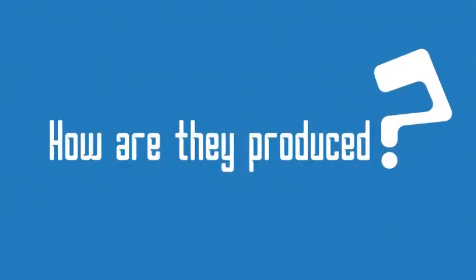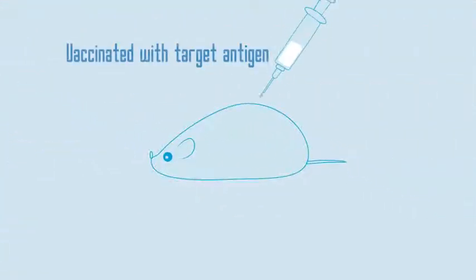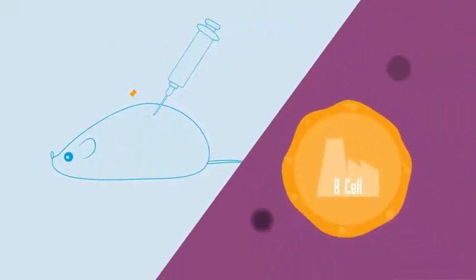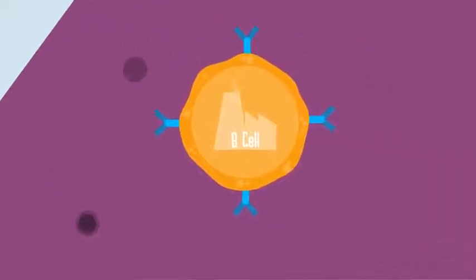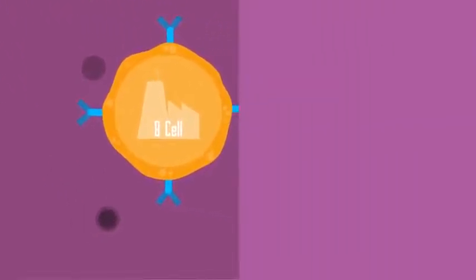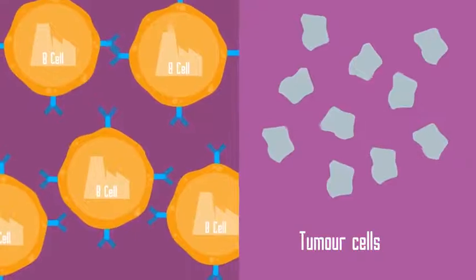So how are they produced? Well, first off, we need an immune system, which is why we use mice. In a laboratory, a mouse is vaccinated with the target antigen. This stimulates the B cells found in the spleen to produce antibodies against the target antigen. The spleen of the mouse is then removed. The B cells in the spleen are isolated and fuse with a tumor cell.